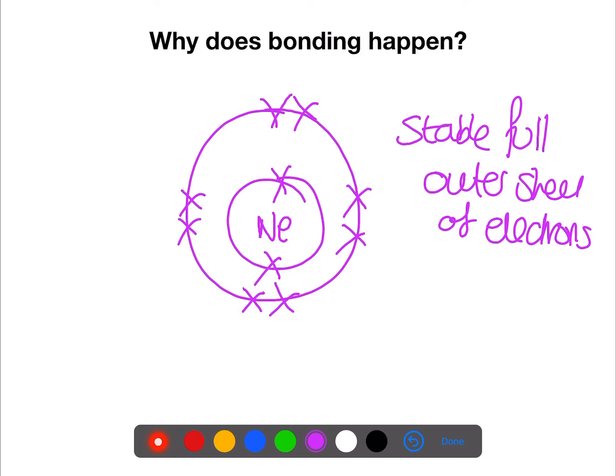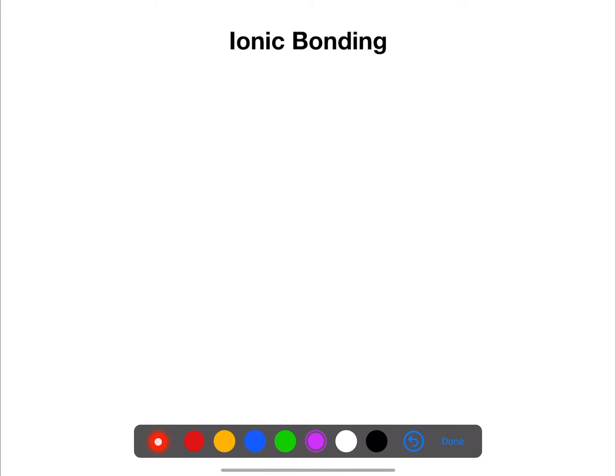All other elements that are not noble gases need to bond to achieve a full outer shell of electrons. There are two types of bonding that we're going to look at today: ionic and covalent. The first type of bonding we're looking at is ionic bonding.